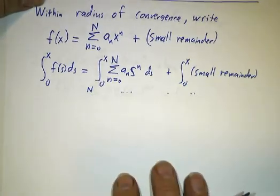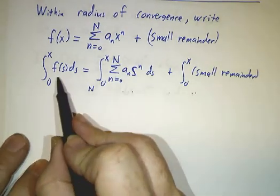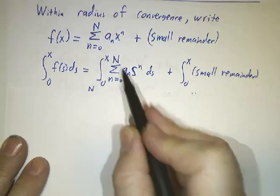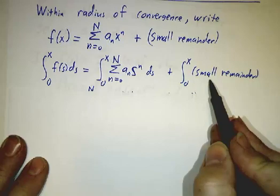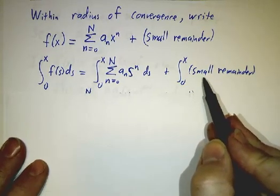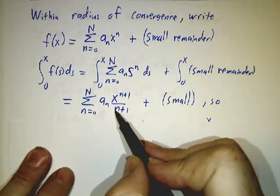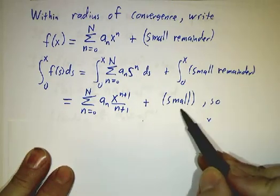And then we just integrate it. And the integral of little f is the integral of all of these, the first N terms, plus the integral of the small remainder. Well, the integral of a polynomial is easy. We know how to integrate a polynomial. And the integral of something small is small.